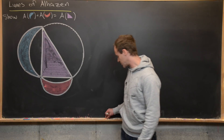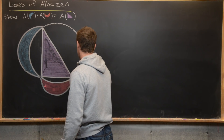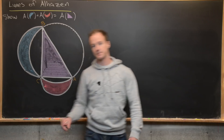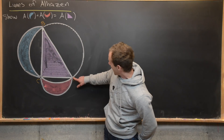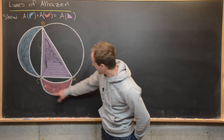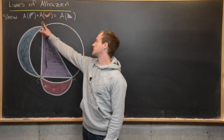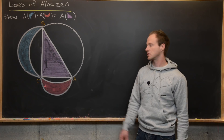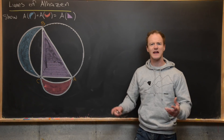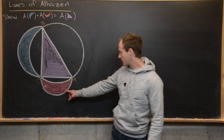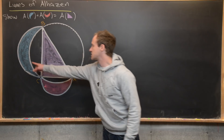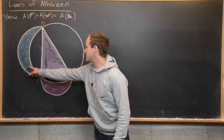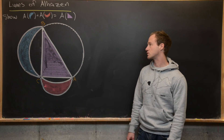Let's name the right triangle's vertices A, B, and C. We have a half circle defined by points A and C, and another half circle defined by points B and C. The intersections of those half circles and the circumcircle create something called a lune. We have this lune in red and this lune in blue. Our goal is to show that the sum of the areas of these two lunes equals the area of the right triangle — blue plus red equals purple.